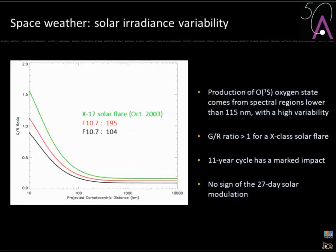In the planetary space weather context, we can also consider different solar EUV flux levels. For a quiet, non-flaring sun: one green-to-red ratio. For a high-activity non-flaring sun: the ratio increases slightly. For a very powerful flare: the green-to-red ratio increases a lot, because O(1S) production comes only from spectral regions below 115 nanometers, where solar irradiance variability is highest. Interestingly, there is a clear 11-year cycle impact but no sign of the 27-day solar rotation modulation.